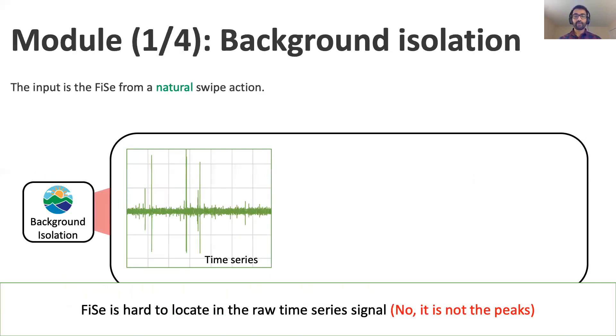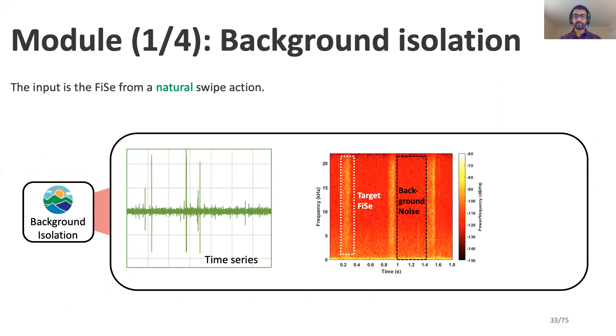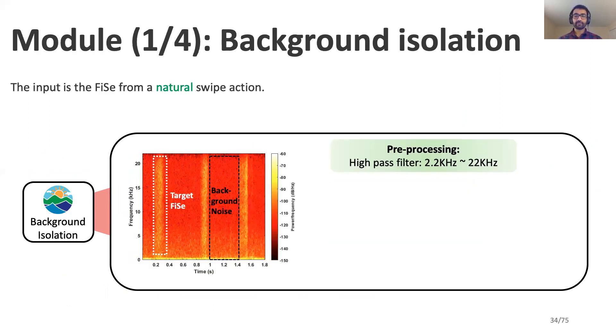Our first module, background isolation, has the objective to remove unwanted noise in the original signal. However, this noise is prevalent in the time series, making it hard to identify the target signal. We can identify the FICE recordings in the frequency domain. To remove these unwanted background noise, which typically arises from human voice or music, we first employ a high-pass filter with a range of 2.2 kHz to 22 kHz.